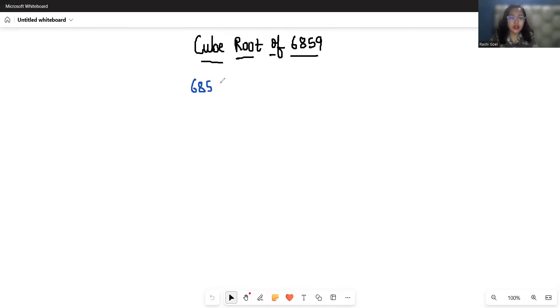We can see that 6859 ends with 9, so their cube root's unit digit will be 9. So it will be 9, 19, or 29. Let's check which one is correct among them.